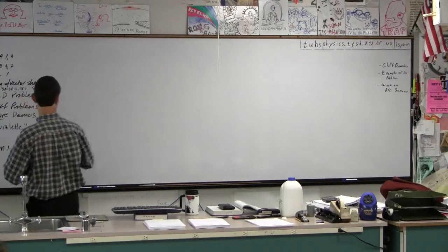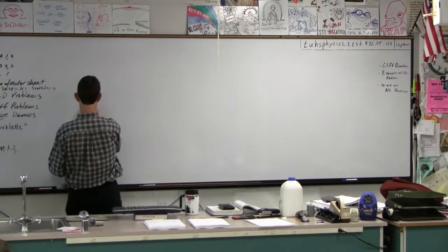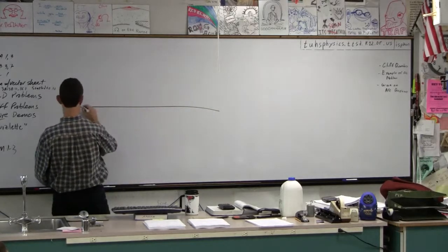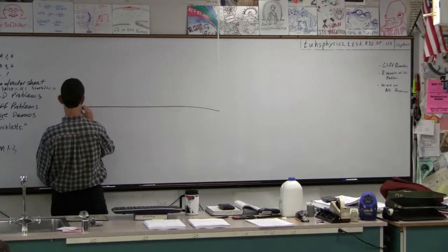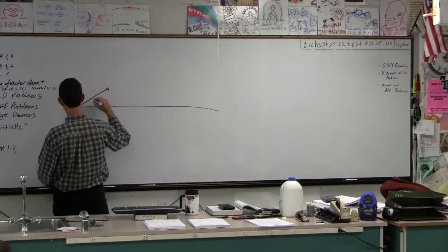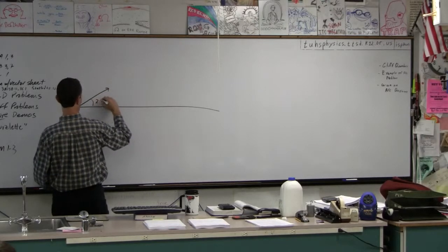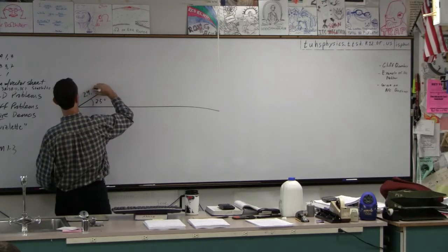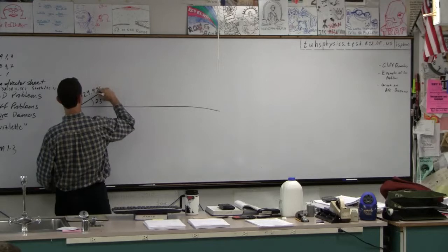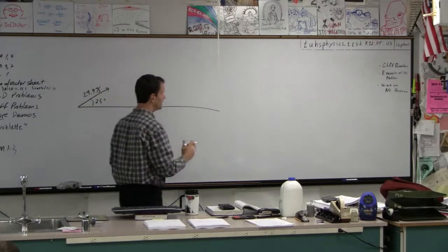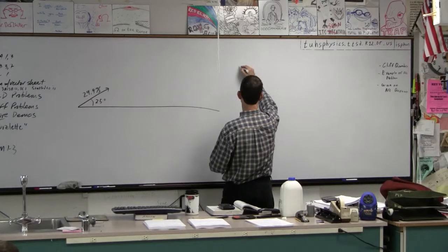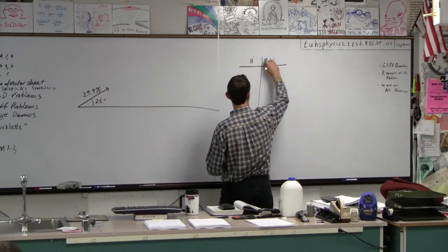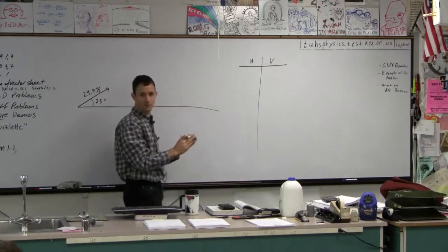I'm going to draw it up here. We are launching something at a long flat shooting range at an angle like this, a 25 degree angle, and it's 29.9 meters per second, not quite 30 meters per second. Now the good news is we're going to solve this thing by using the same exact thing that we've done before.